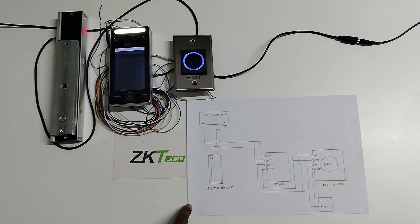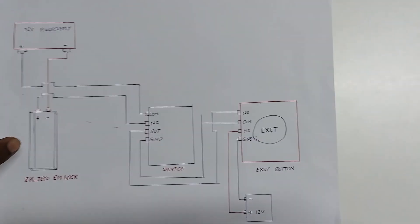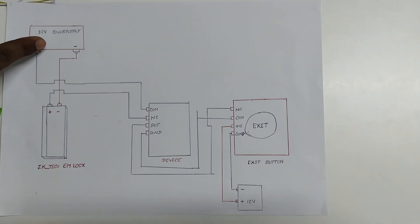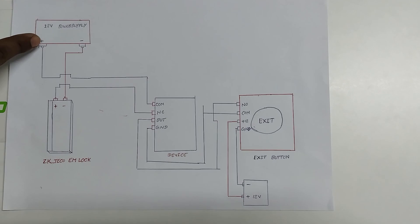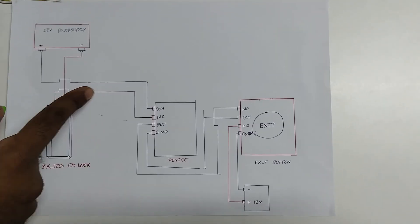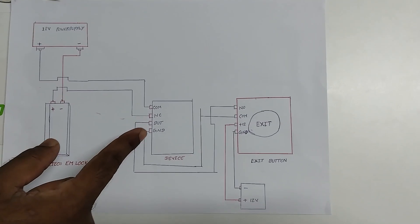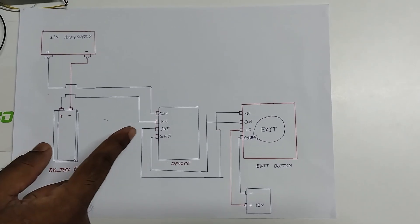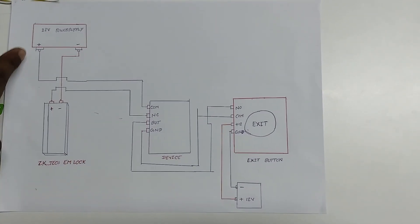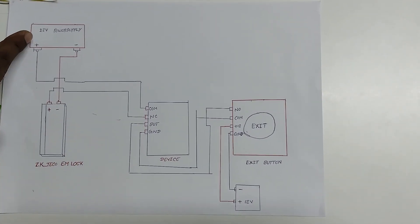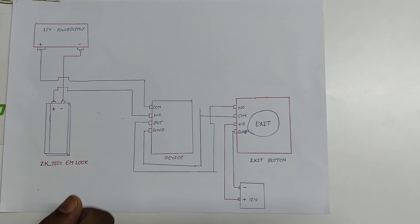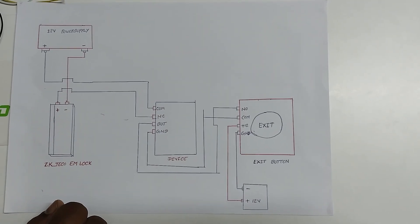You can see here. From the ZKTQ EM lock, negative should be connected with the 12 volt power supply negative, and ZKTQ EM lock positive should be connected with the Mini-AC device NC. And from the Mini-AC device, COM should be connected with the 12 volt power supply positive. This is how we will connect the ZKTQ EM lock with the Mini-AC device.